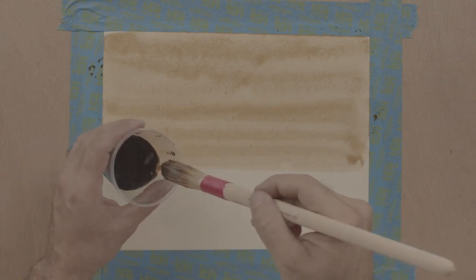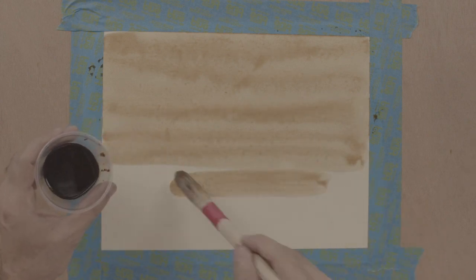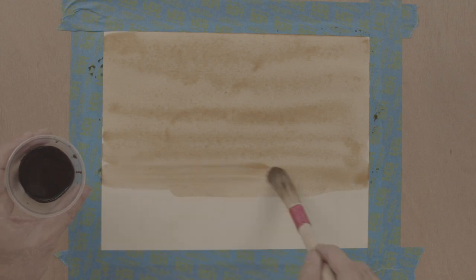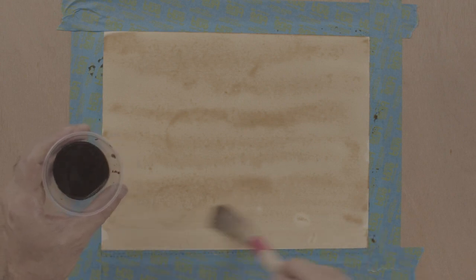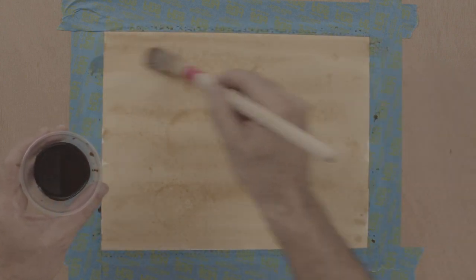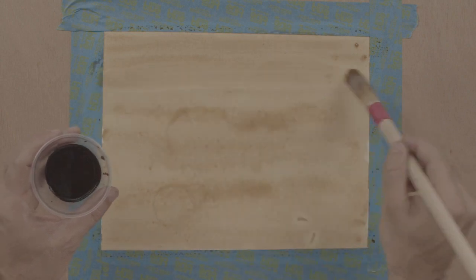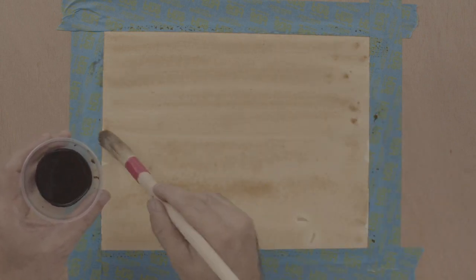In this case, I'm going to be using Conte Crayon, which is similar to black chalk. And you can see that it's not an even tone. It goes into the texture of the paper, and it really gives you a beautiful uneven tone.